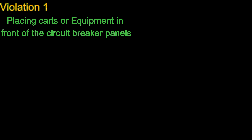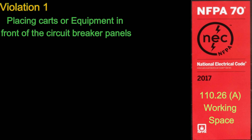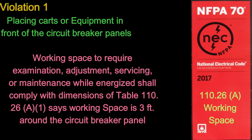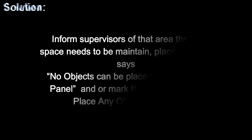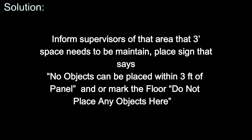Finally, Number 1: Placing carts or equipment in front of circuit breaker panels. Code NFPA 70 110.26 A — working space. Working space required for examination, adjustment, servicing, or maintenance while energized shall comply with the dimensions of Table 110.26 A.1, which states working space is three feet around the circuit breaker panel. Solution: Inform supervisors of that area that three feet of space needs to be maintained. Place a sign stating no objects can be placed within three feet of the panel, and mark the floor accordingly.